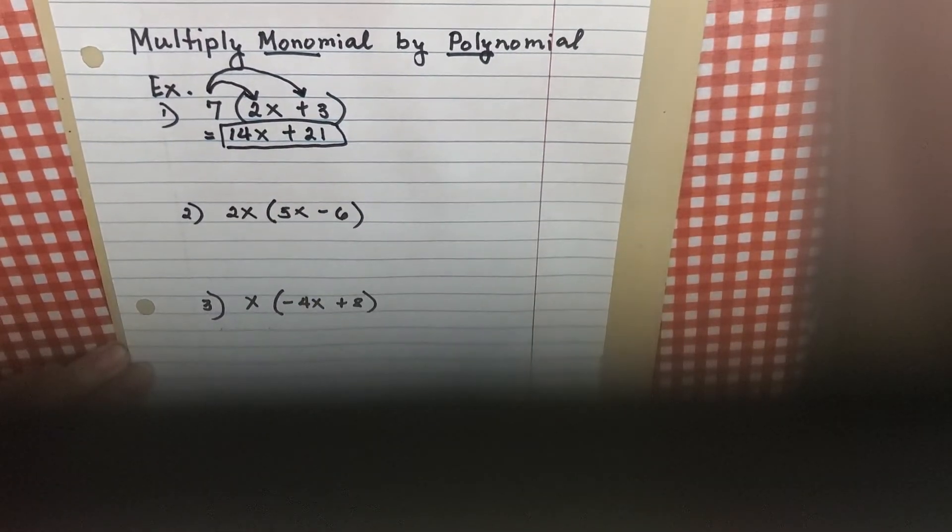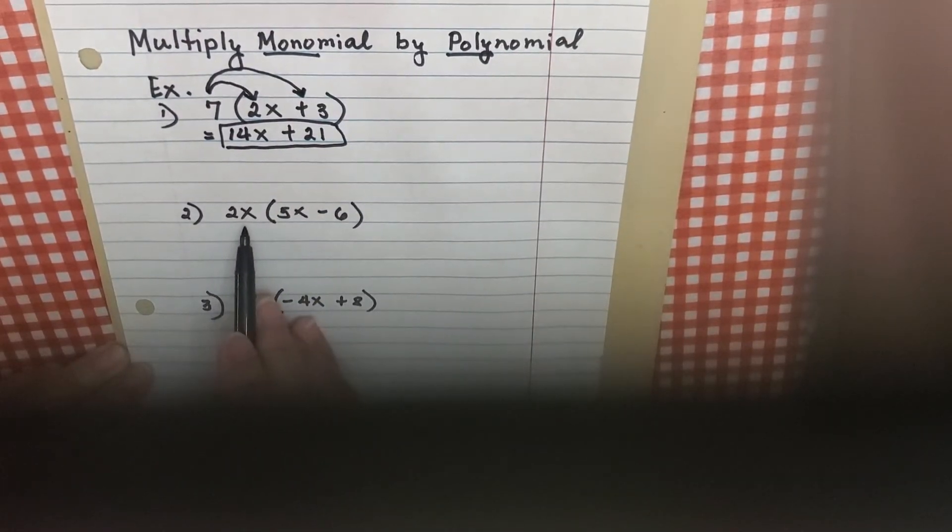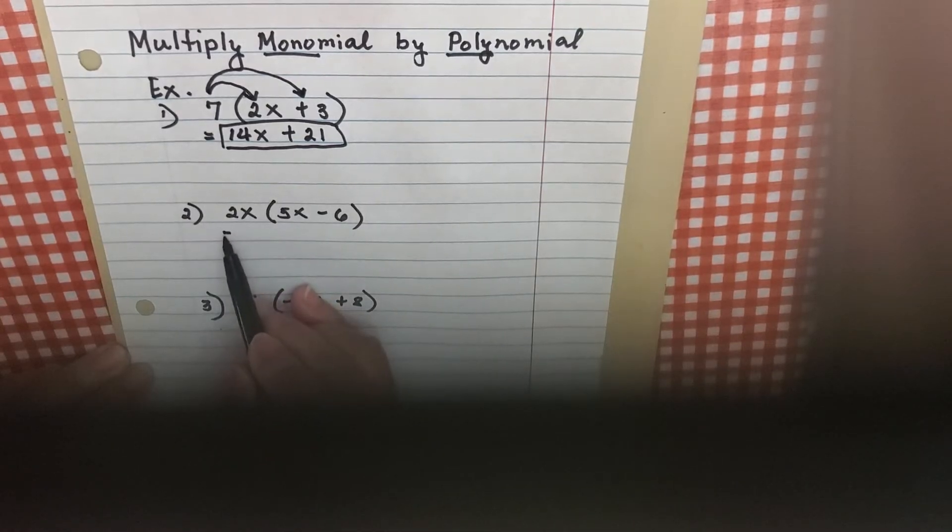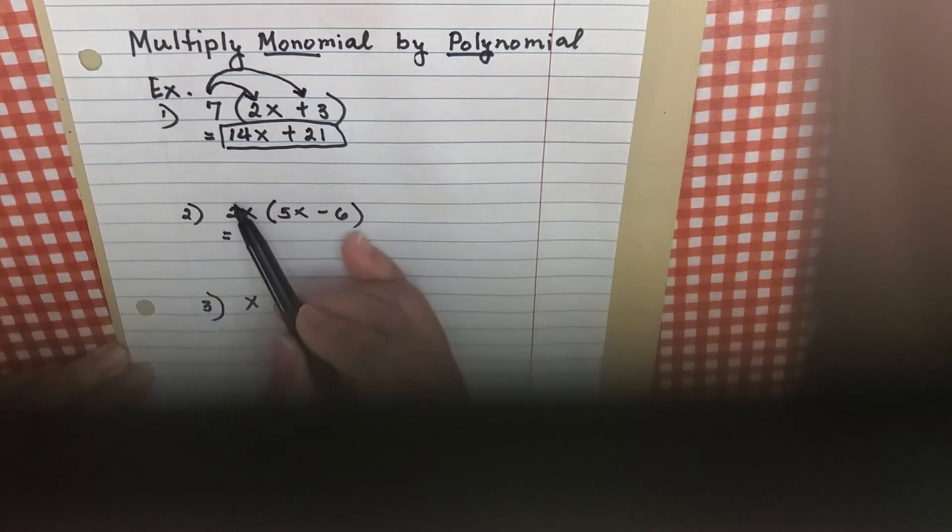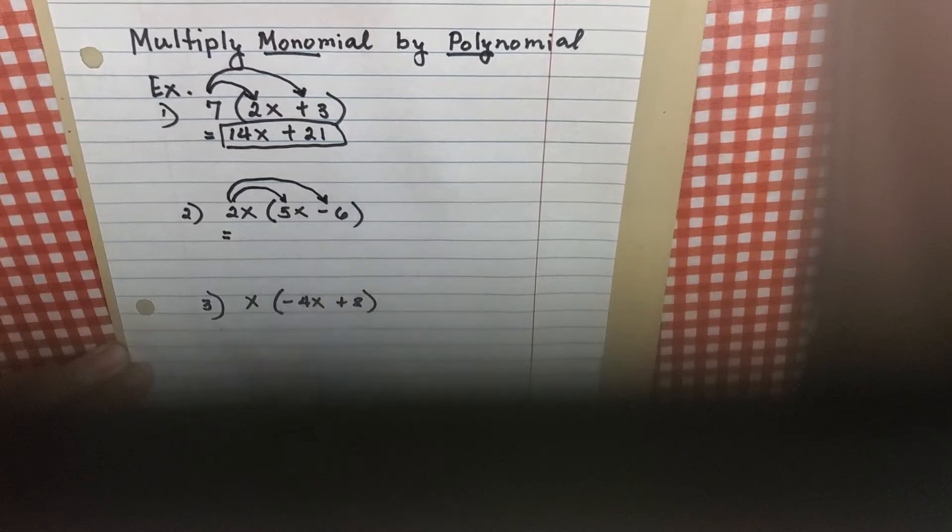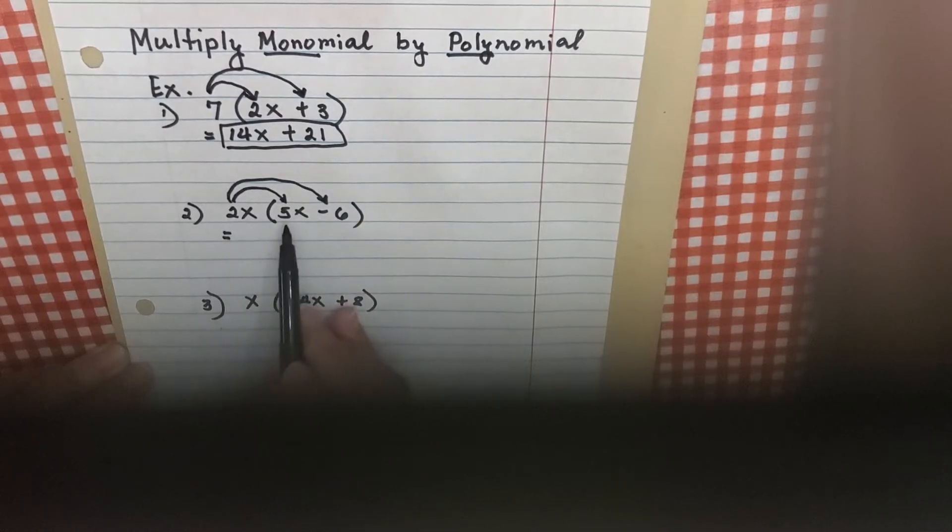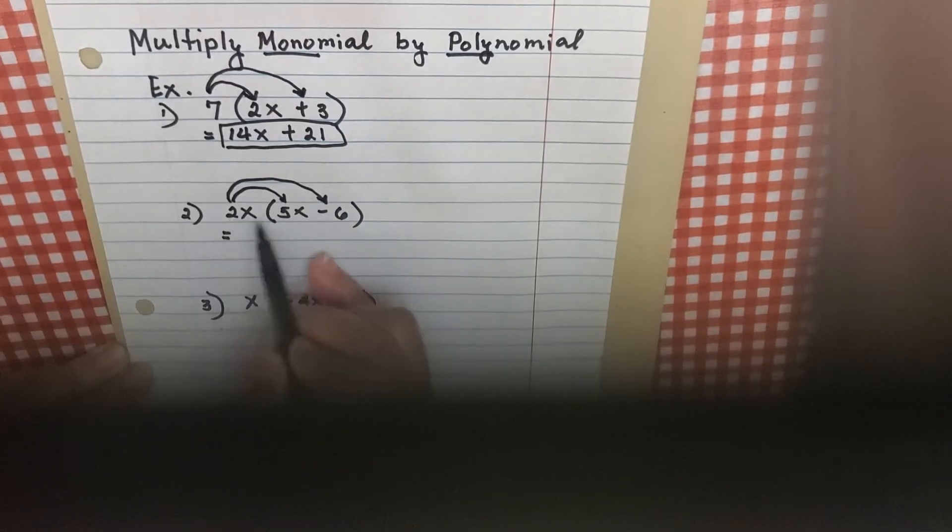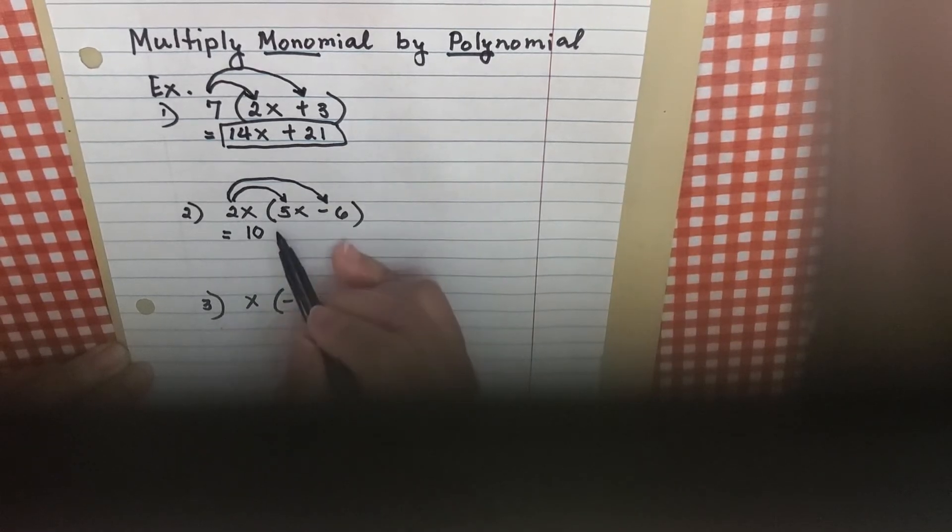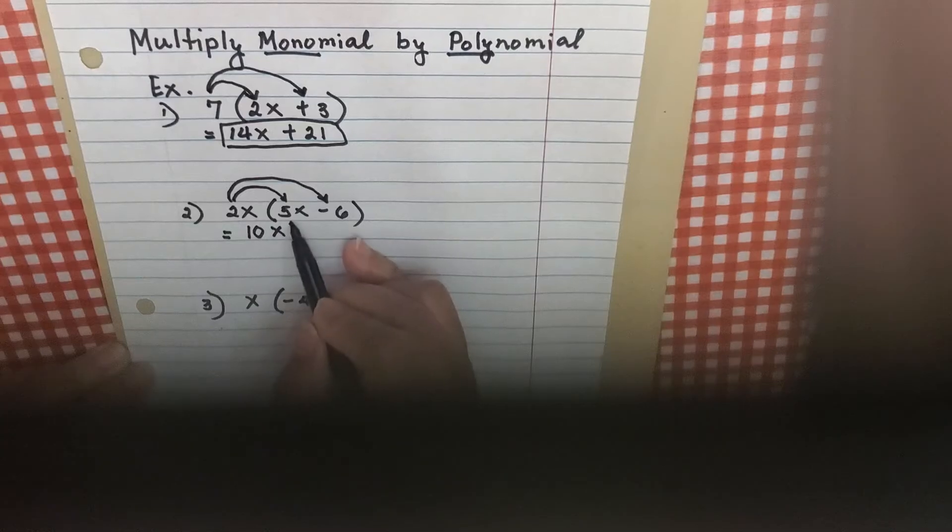Second example. I have 2x times 5x minus 6. So multiply the coefficient, the number at the front, 2 times 5. Distribute first. So I multiply 2x times 5x. Multiply the coefficient, 2 times 5 is 10, and then x times x, you add the exponent.